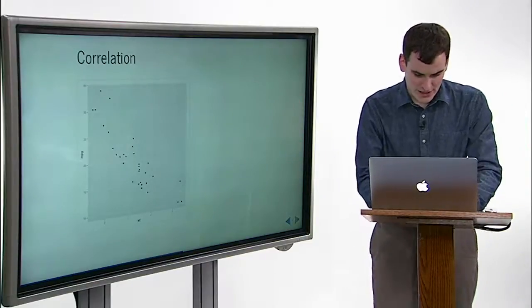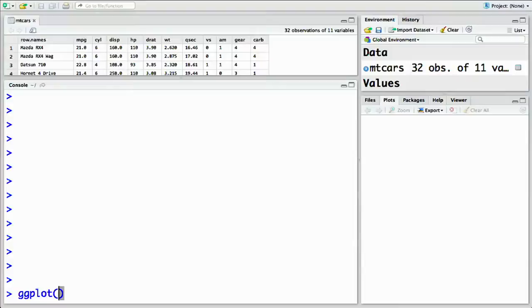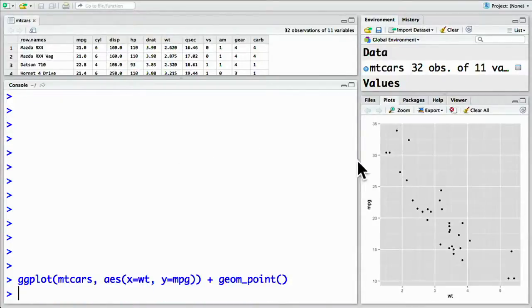So in this case, we can do that with ggplot, then the data, mtcars, then what we want on the x-axis, in this case weight, and what we want on the y-axis, in this case miles per gallon. Then we add the term for a scatter plot, which is geom underscore point, parentheses, and we create our scatter plot.